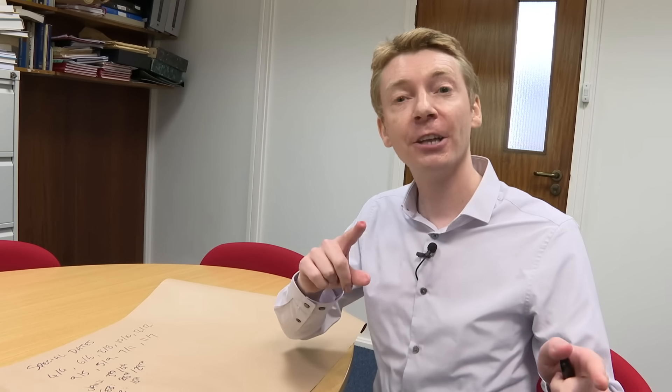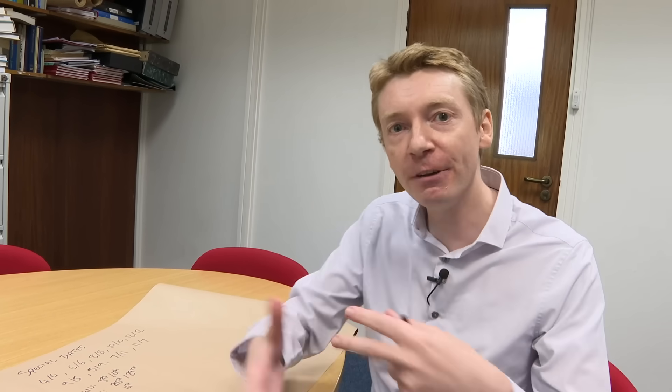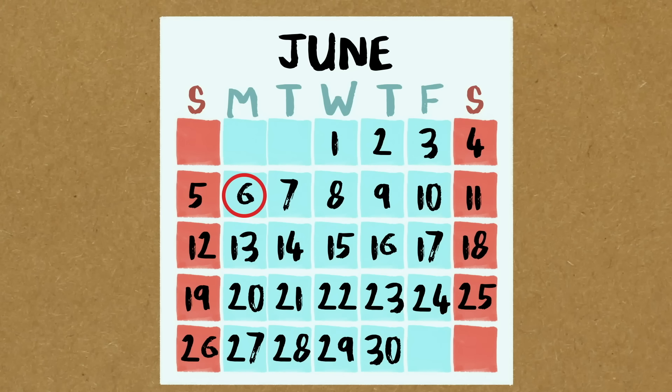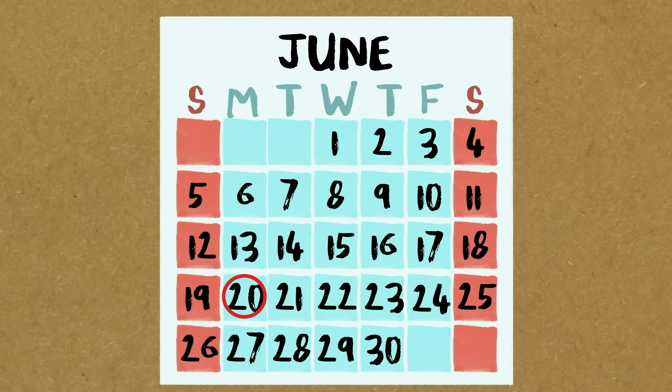Now if the date you want to know is not one of these special dates, you just adjust. All I have to do is find the nearest special date and then add or subtract a few days. One thing to remember: if you add seven days, you end up back where you started. So if I had to add 15 days, I'd add 14 — which takes me back to the same day — and then add one more.